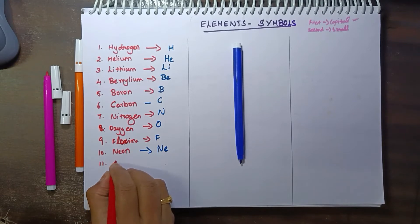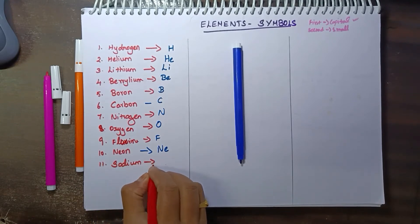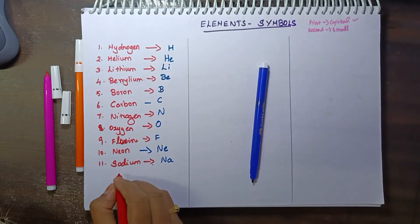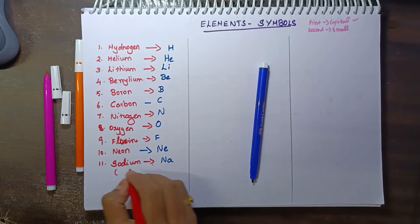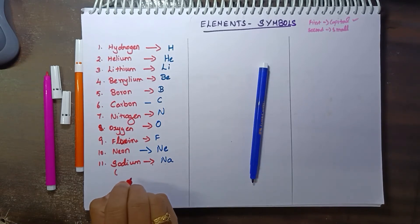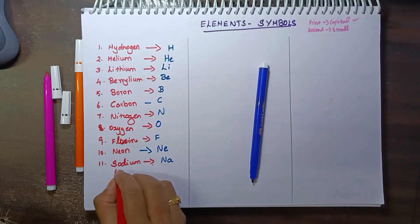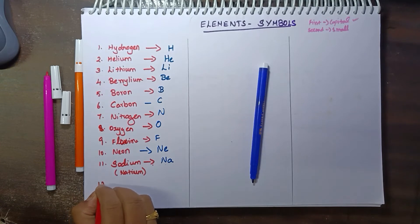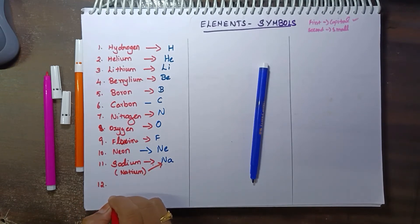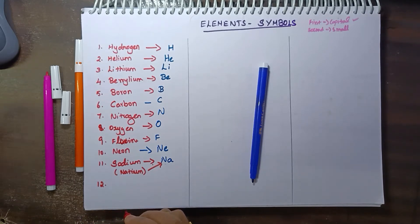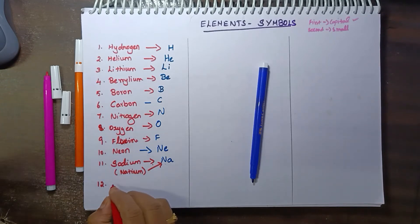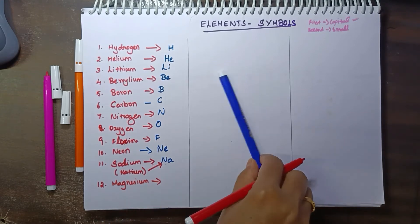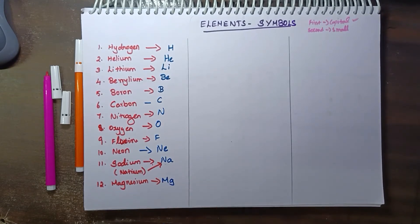Next element is sodium. Sodium is a problem because its symbol is Na — from its Latin name. And then next is magnesium. Magnesium's symbol is Mg: capital M and small g.